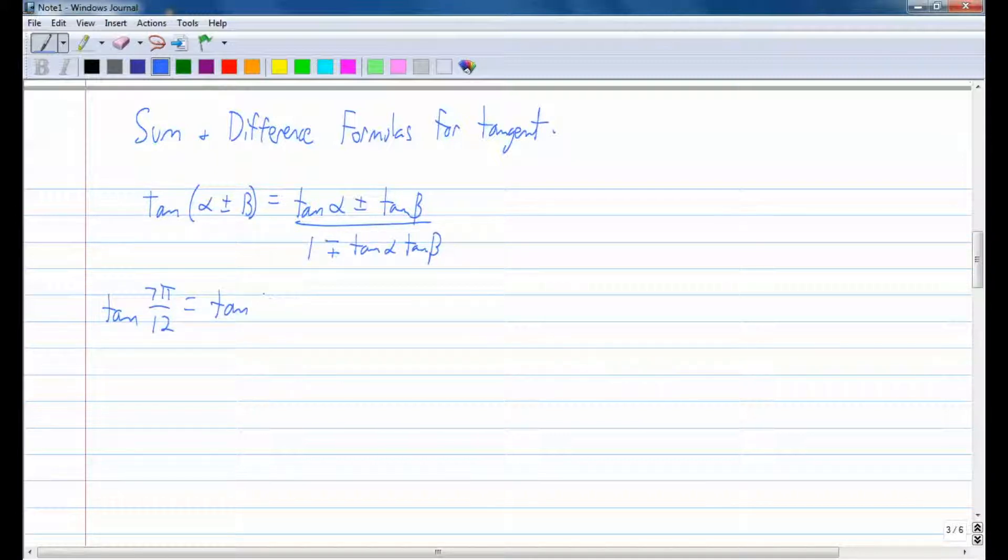One way to get 7π over 12 would be to say the tangent of 3π over 12 plus 4π over 12. And so the reason I break it up like this is so you can see 3π plus 4π is 7π. So what are those angle measures? That's π over 4. So that's the tangent of π/4 plus π/3, which are common angle measures.